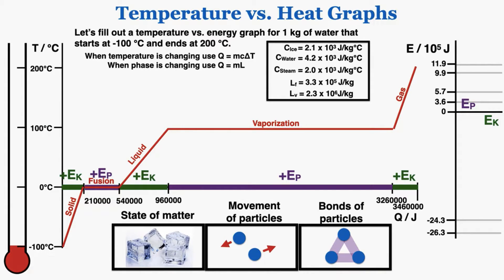I can now trace through the entire graph and show a detailed animation of what's happening to the temperature of the material, the state of matter, and the movement of the particles — because adding internal kinetic energy causes particles to move faster. I'll also show the bonds between particles, and on the right graph the exact values of potential and kinetic energy. Starting at negative 100°C, the potential energy is very low, and the water has kinetic energy of about 3.6 × 10⁵ joules above absolute zero.